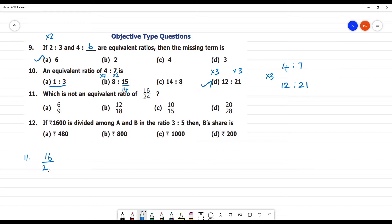Which is not equivalent to 16 by 24. 16 by 24 is not equivalent. We will go to the simplest ratio. 16 by 24, we cancel 4. This is the simplest ratio. 2 by 3. 2 by 3 is the simplest ratio.